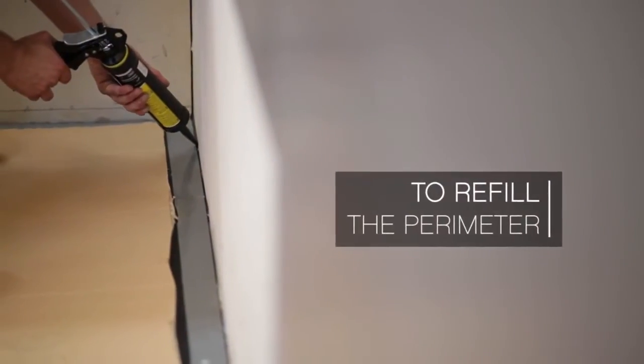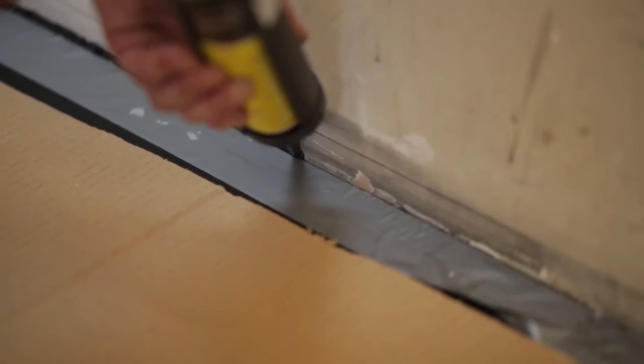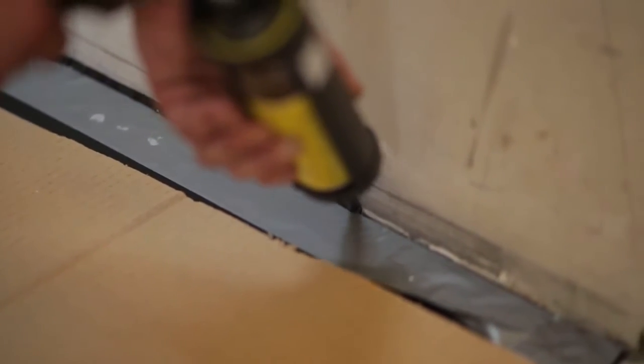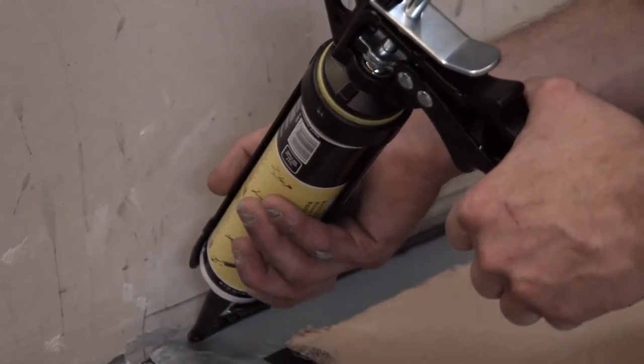Fill in the remaining spaces around the perimeter of the shower tray and walls with polyurethane filler for maximum water tightness.